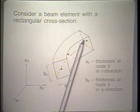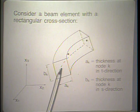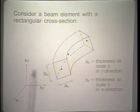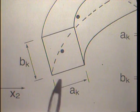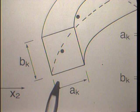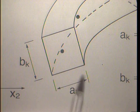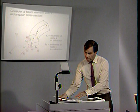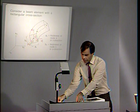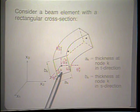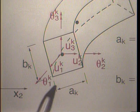Here I'm showing a typical beam element with a rectangular cross-section and three nodes. The beam element can be used with two, three, or four nodes, as we will discuss further later on. We notice that the depth of the element is ak and the thickness of the element is bk. At these nodes, we measure certain nodal point variables: three incremental displacements and three incremental rotations.